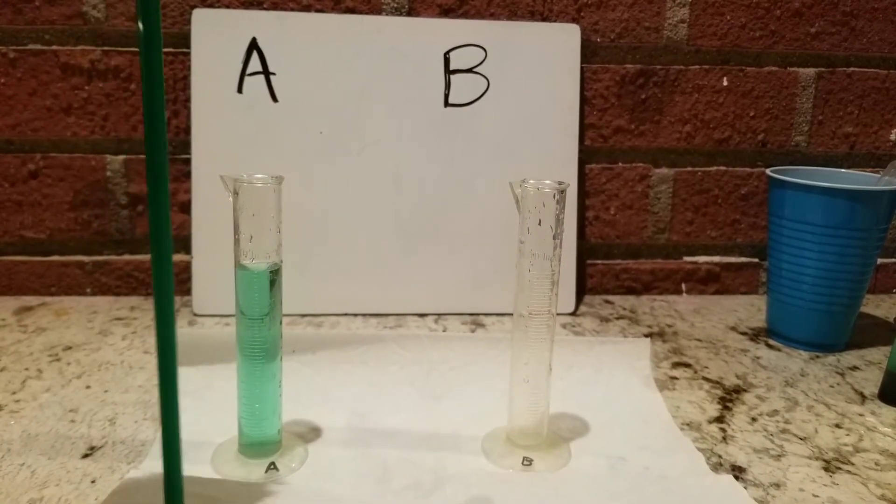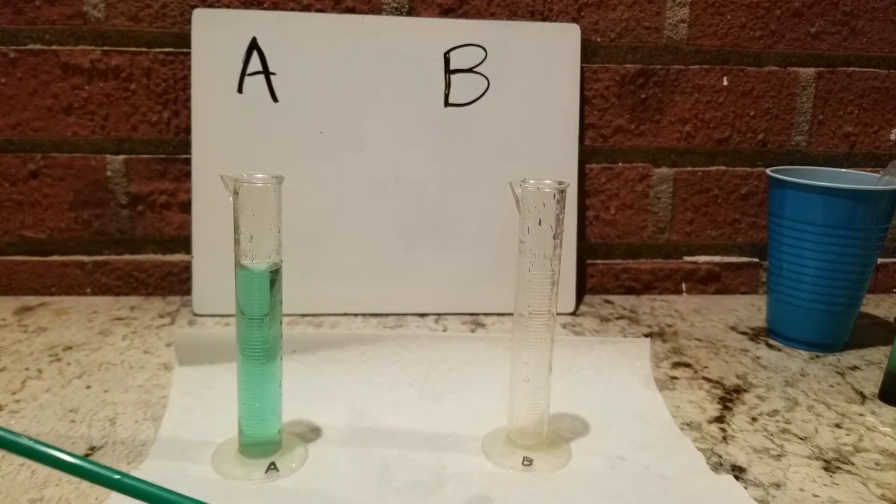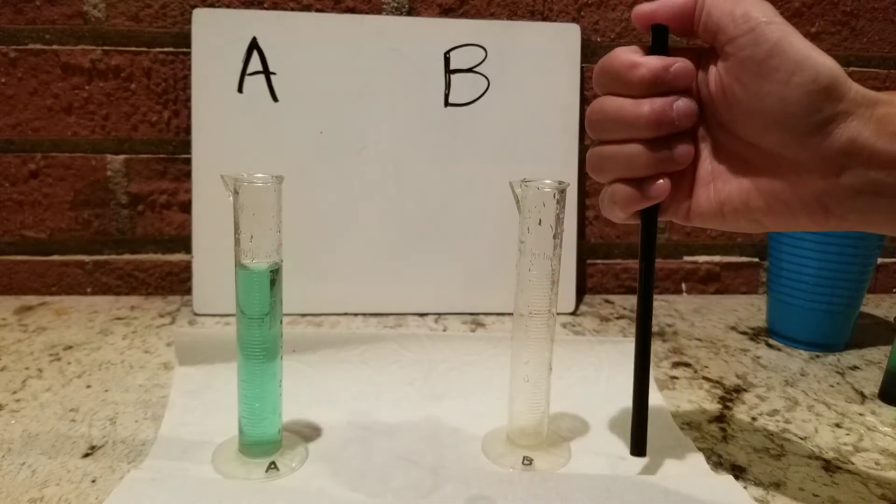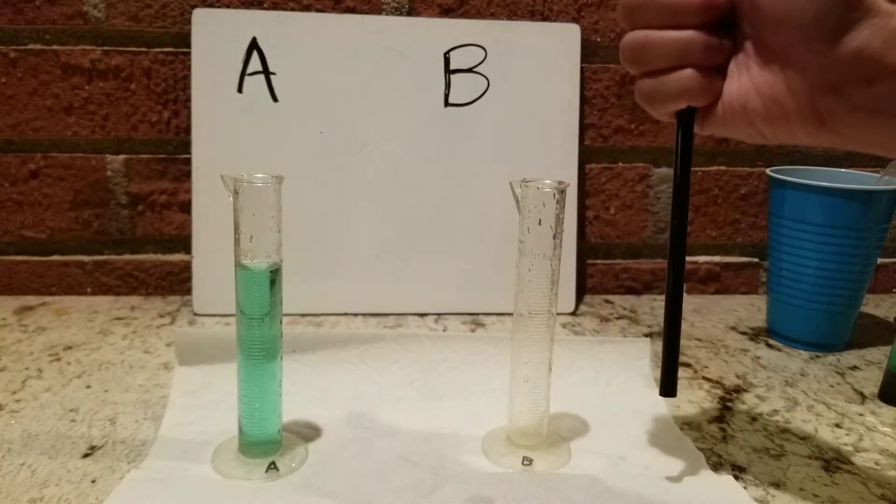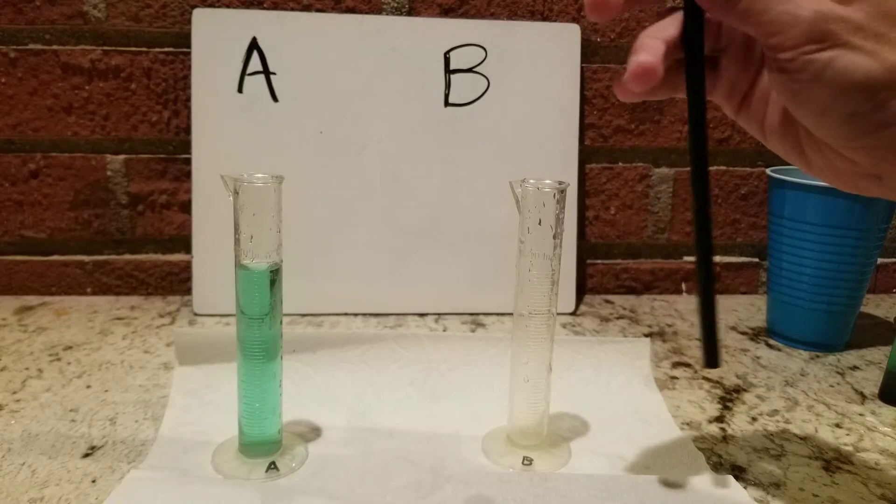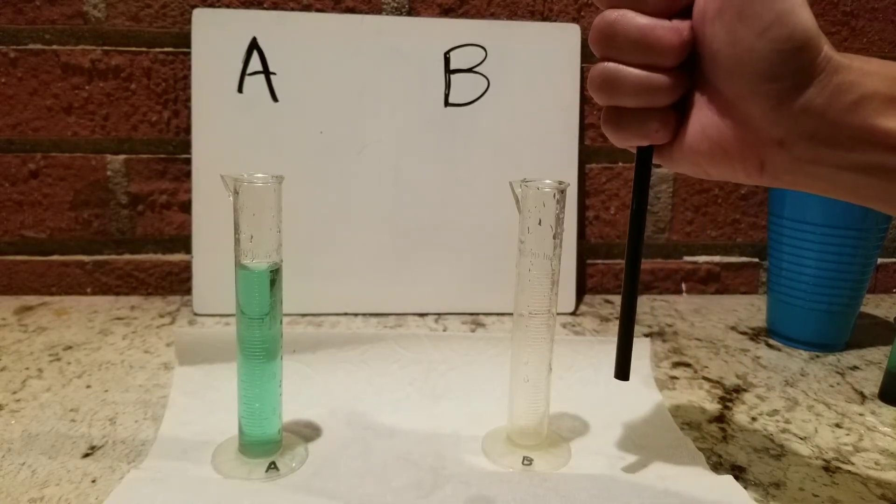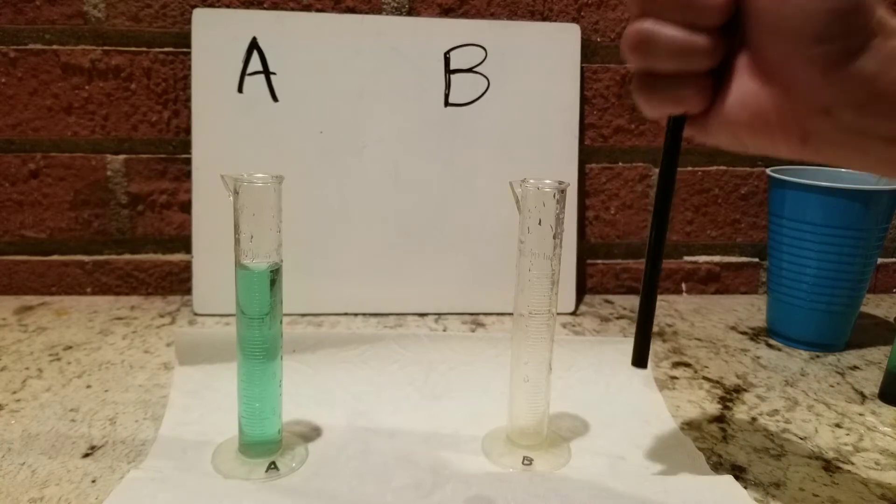A will still be using the same straw, but now B will be transferring with a much smaller straw. So the idea is consistency, so I can't keep switching how much. If I'm holding it this way, I'm holding it this way, which means I might not be able to actually reach the bottom.